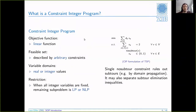What is the constraint integer programming way of modeling this problem? The objective and the node degree constraints are the same, but instead of these exponentially many subtour elimination constraints you can just have one constraint that says 'no subtours'. Of course you then have to implement what this means later. Inside the constraint handler you can implement basically all your measures to deal with this kind of constraint - for example you could separate the subtour elimination inequalities dynamically and strengthen the relaxation that way, or do domain propagation.